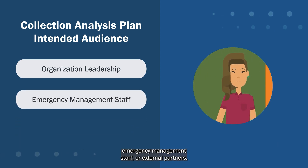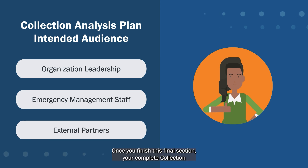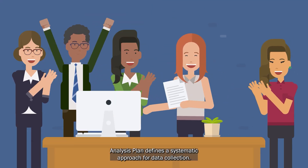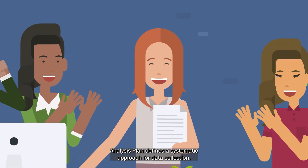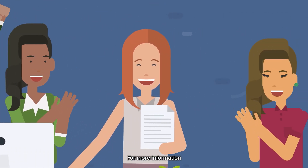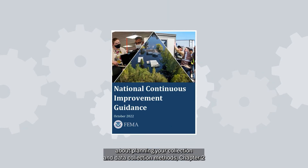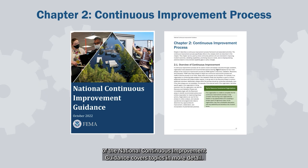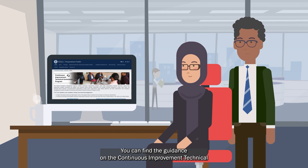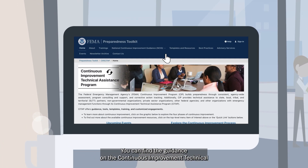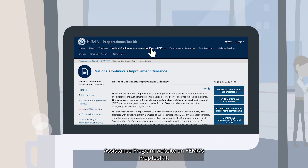Once you finish this final section, your complete collection analysis plan defines a systematic approach for data collection. For more information about planning your collection and data collection methods, Chapter 2 of the National Continuous Improvement Guidance covers topics in more detail. You can find the guidance on the Continuous Improvement Technical Assistance Program website.